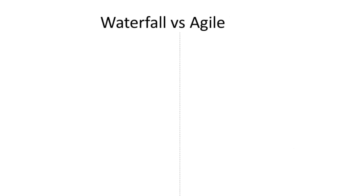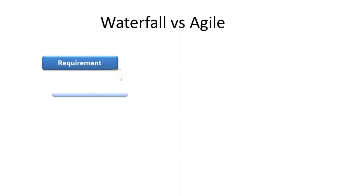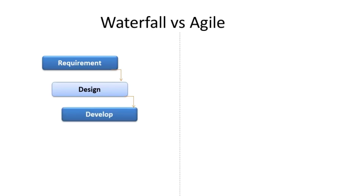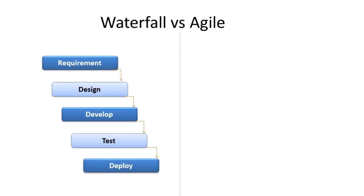Let us now understand the execution flow diagram for each of them, starting with Waterfall. The diagram shows it starts with a detailed and extensive requirement gathering phase. Once the requirement phase is complete, the design team starts working on those requirements. The next phase is development, where the development team works toward building a new product. Once development is complete, testing gets triggered, and after testing thoroughly, it is deployed for end customer usage.